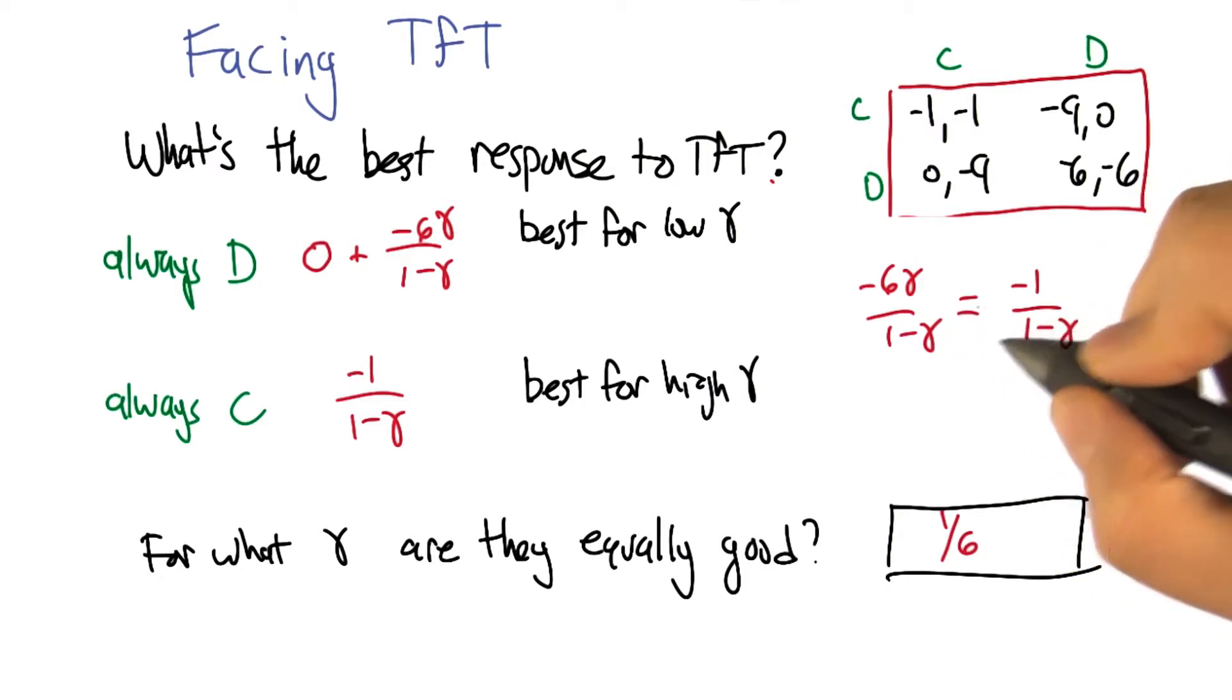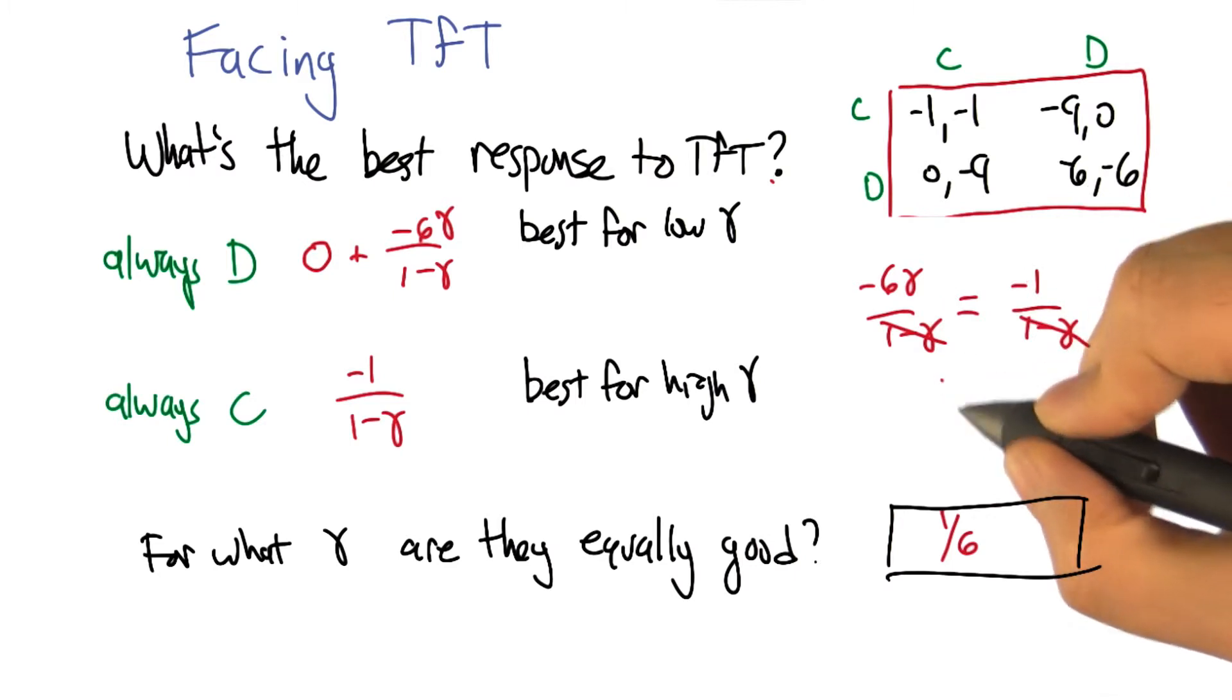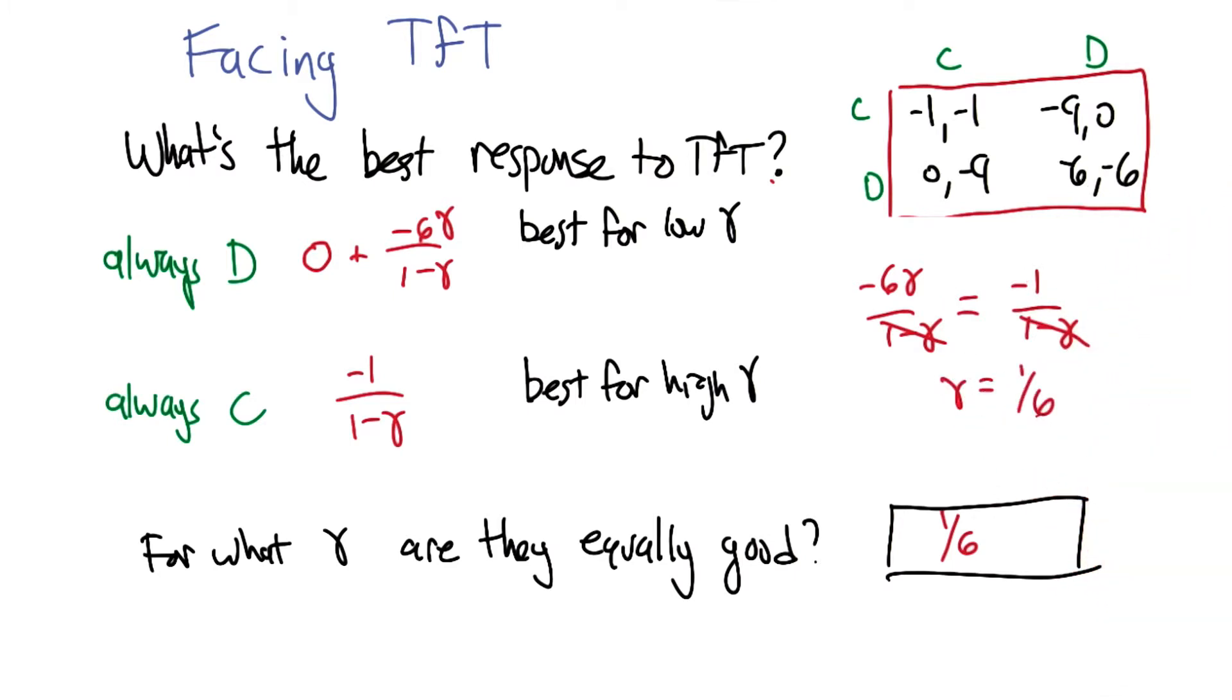Good. All right. And the denominators are the same. As long as gamma's not 1, that's fine. Right. If we divide by the negative 6, we get gamma equals 1/6th. Exactly. Excellent.